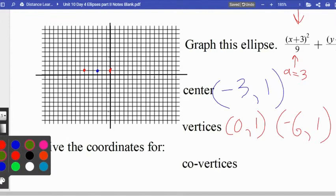The co-vertices will come from B, which is always going to be smaller than A. A is on the major axis, which is by definition bigger. B is on the minor axis, which is smaller. So these are underneath y, so that's obviously up and down. So we have up 2 and down 2 from the center. Those points will be at negative 3, 3 and negative 3, negative 1.